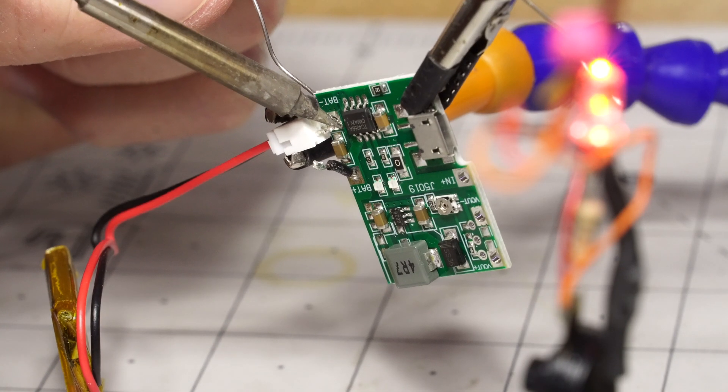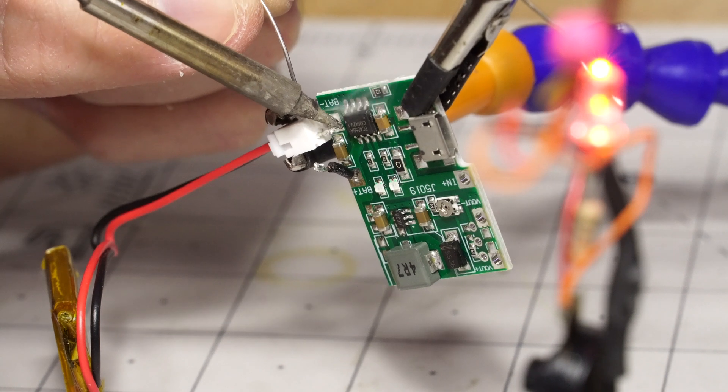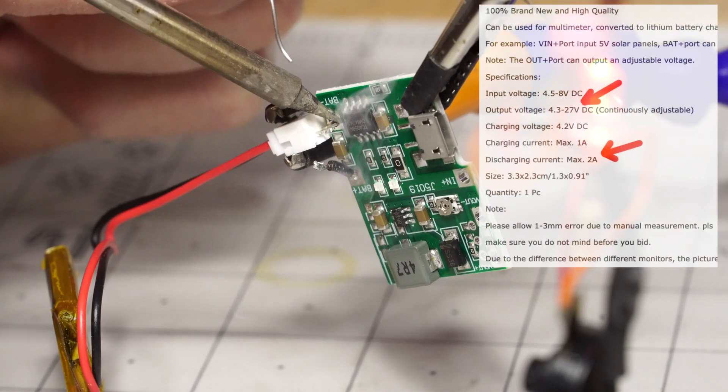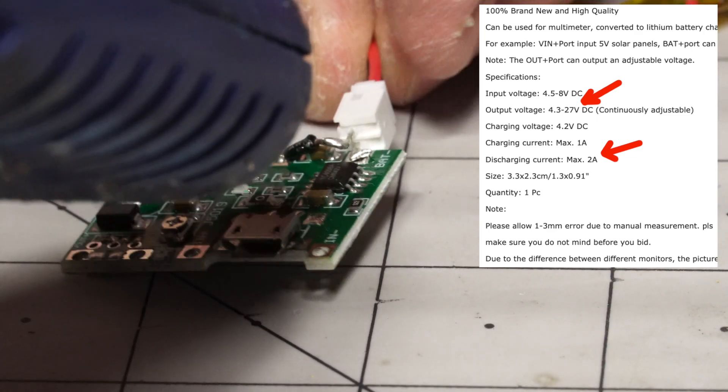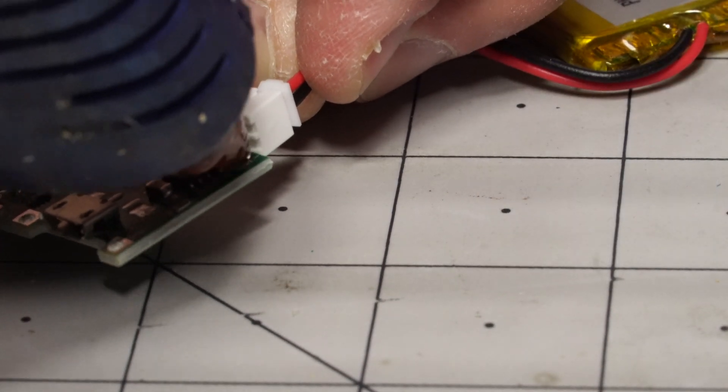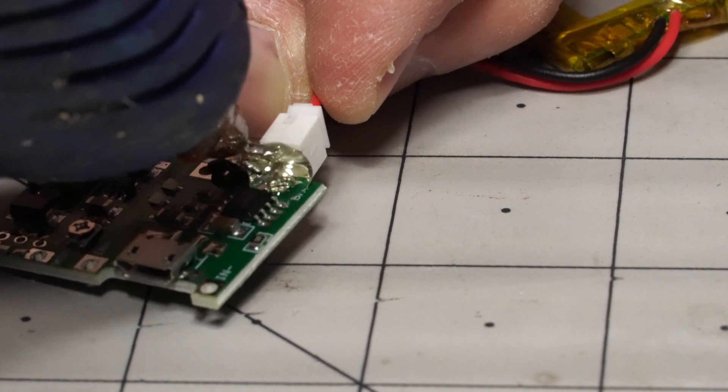So I soldered on a Molex connector to easily connect the battery. Looking good. And this board, you see it can put out up to 27 volts DC and charge the LiPo. So you can either run it on battery power or when plugged in.